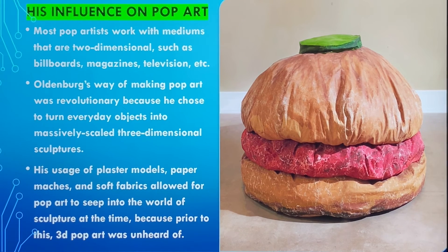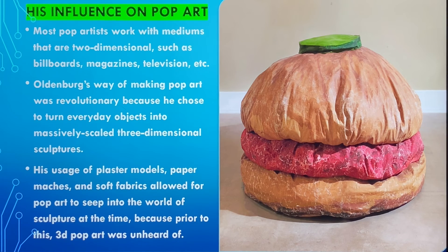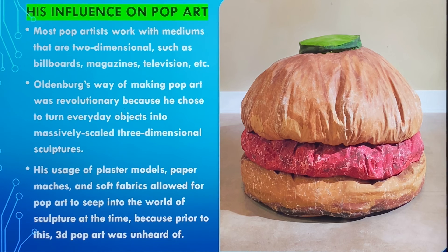His influence on pop art is significant. A lot of pop artists traditionally work in a two-dimensional sense — things like billboards, magazines, television, advertising. But Oldenburg's art was a breakthrough and revolutionary because he chose to turn everyday objects into massively sized 3D sculptures. At the time, it was seen as kind of unheard of because most pop art was known for being two-dimensional. His usage of soft materials allowed pop art to seep in and combine with the sculpture world.